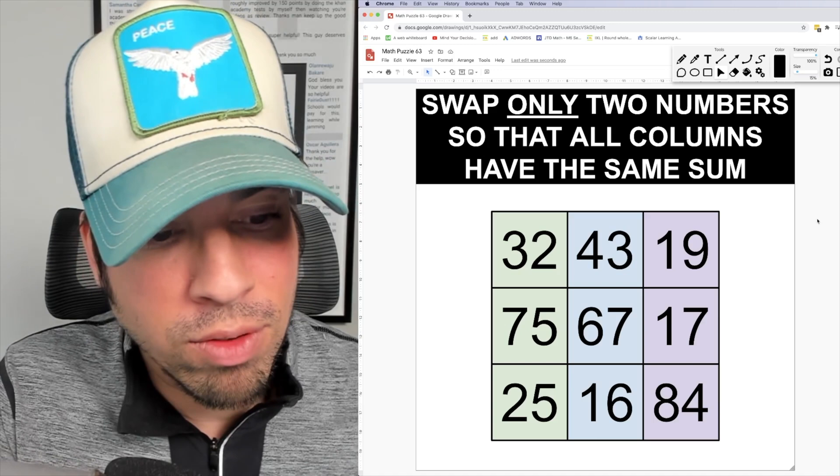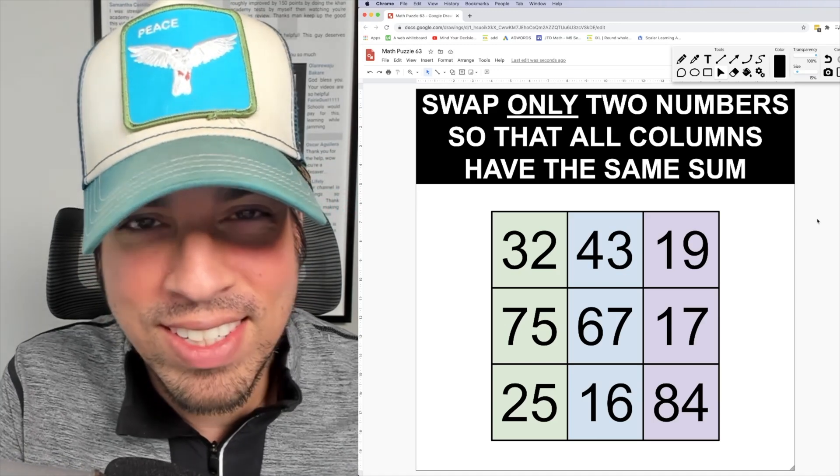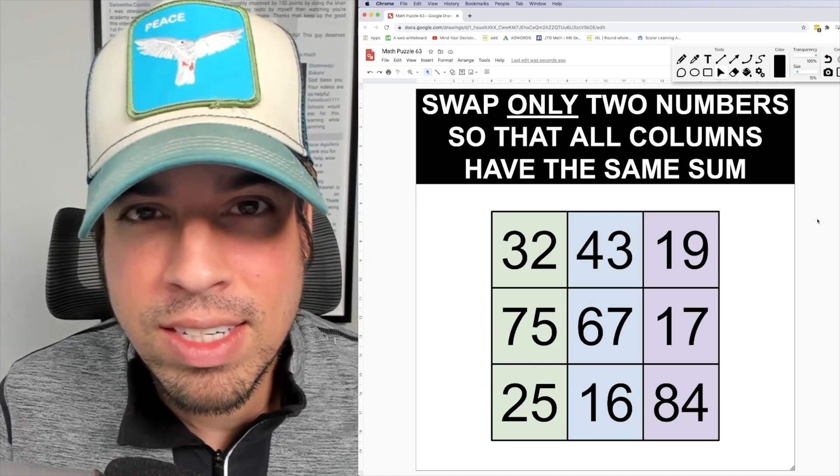So we have 32, 75, 25 in one column, 43, 67, 16 in the second, and 19, 17, and 84 in the third.